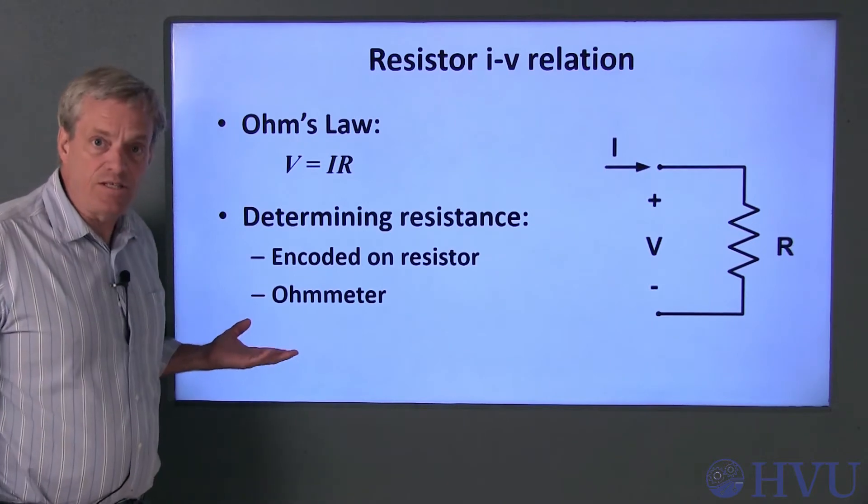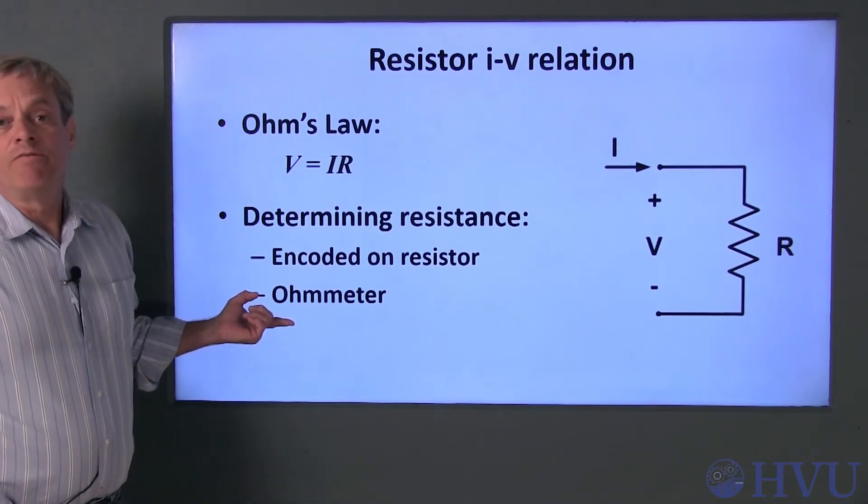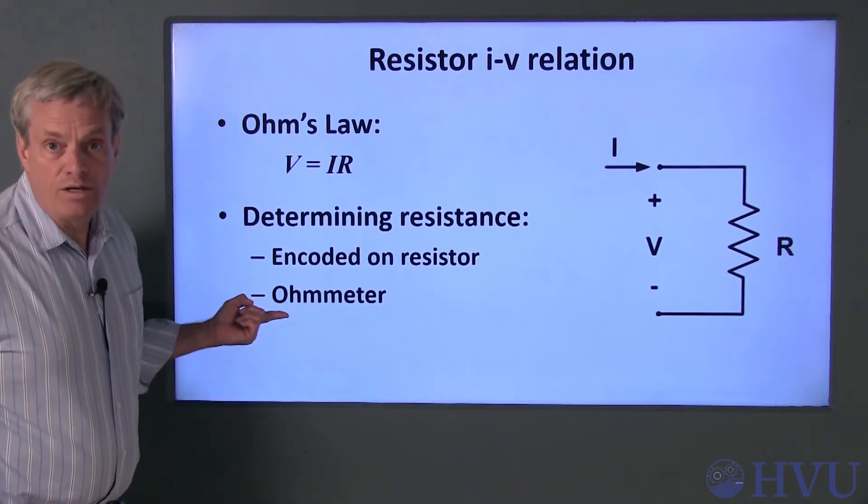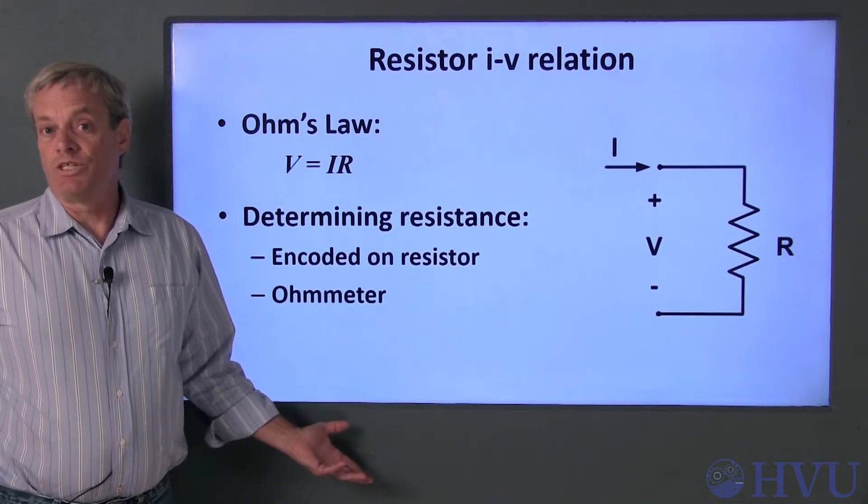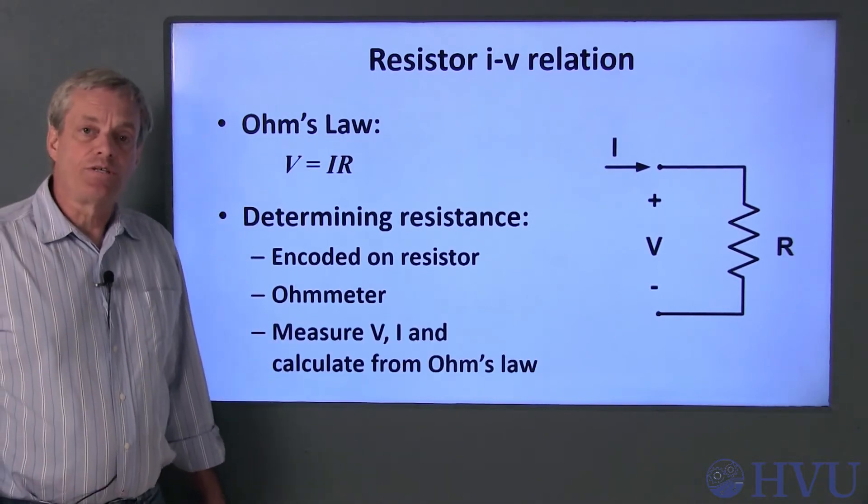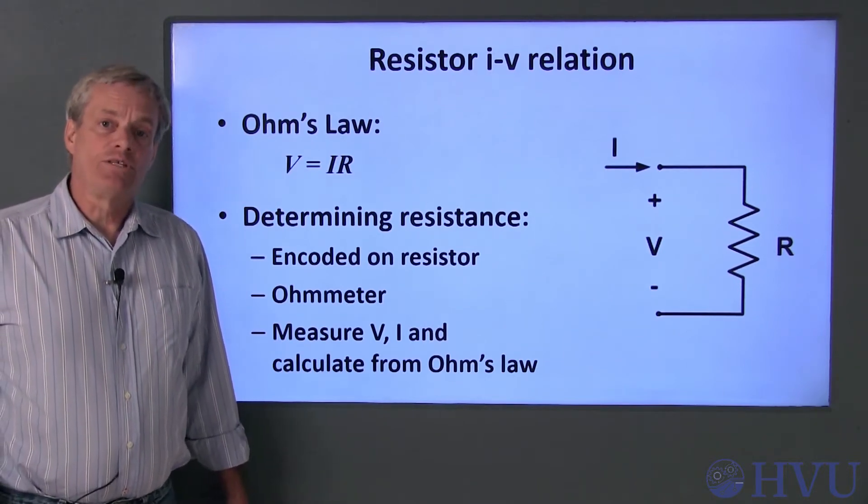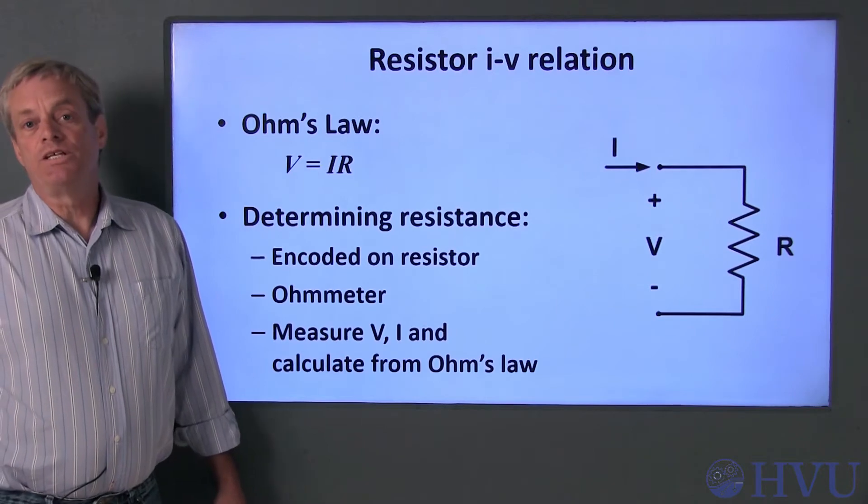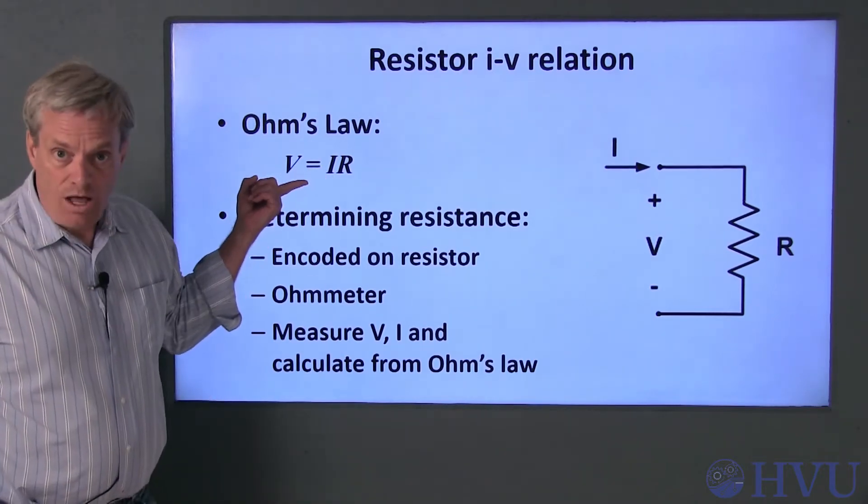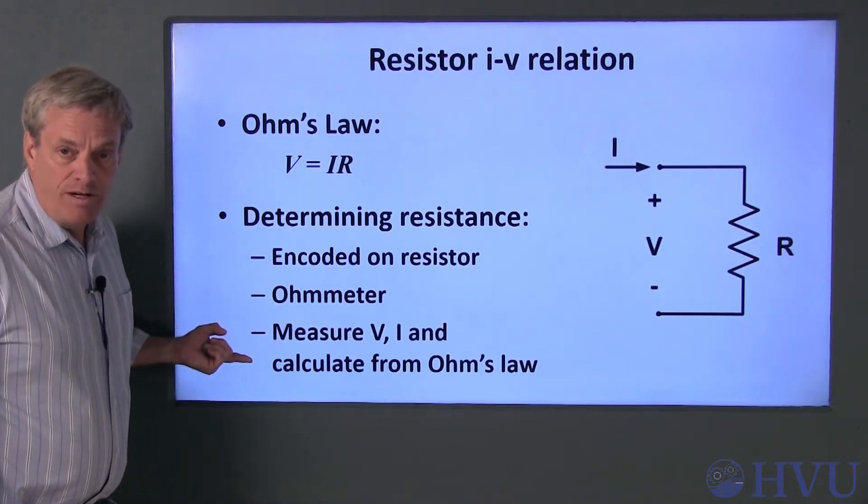Probably the easiest way to measure resistance is with a digital multimeter. DMMs invariably include a resistance measurement function called an ohmmeter, which displays the resistance of a resistor to which it's connected. It's also possible to apply power to a resistor, measure the resistor's voltage difference and the current through the resistor, and use the relationship between voltage and current to calculate the resistance via Ohm's law. In this video, we'll talk at least briefly about all of the above approaches.